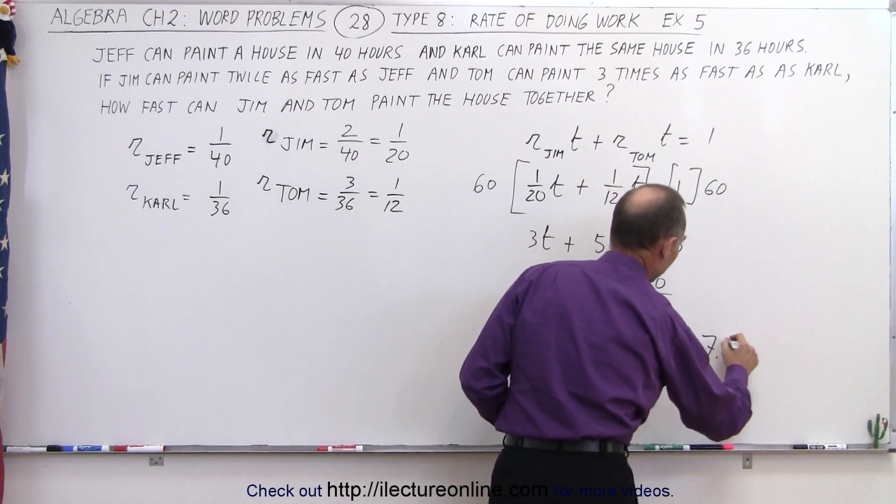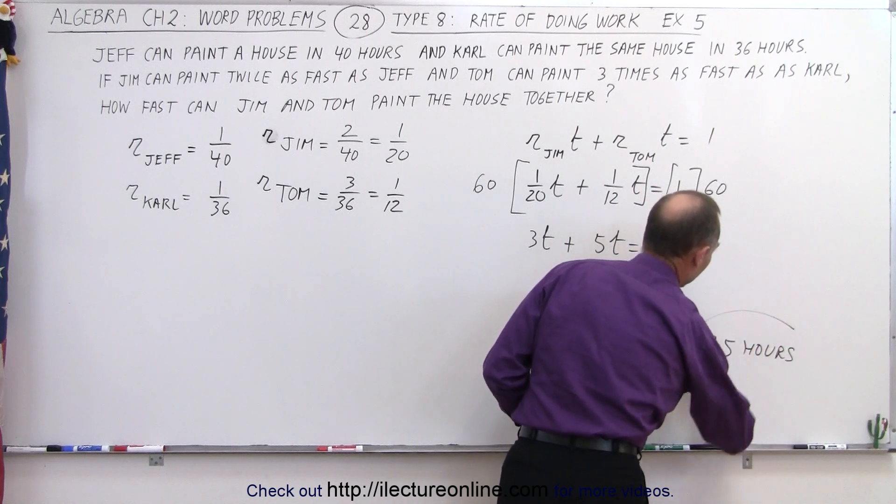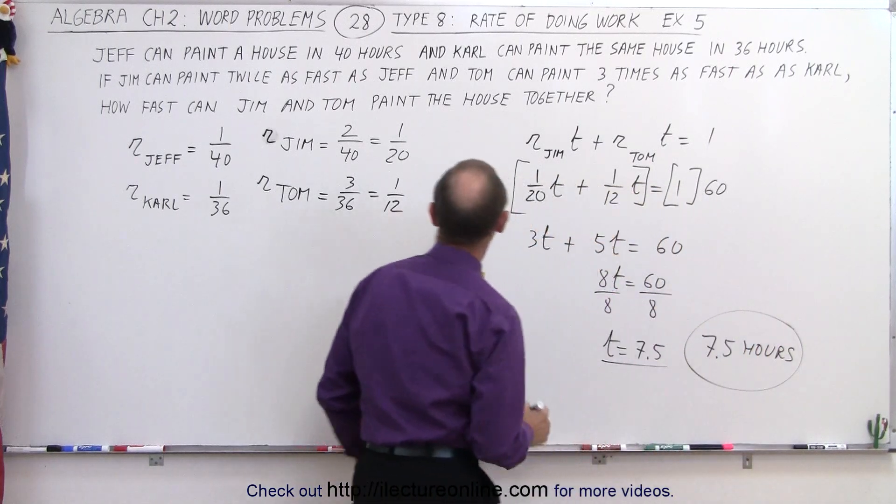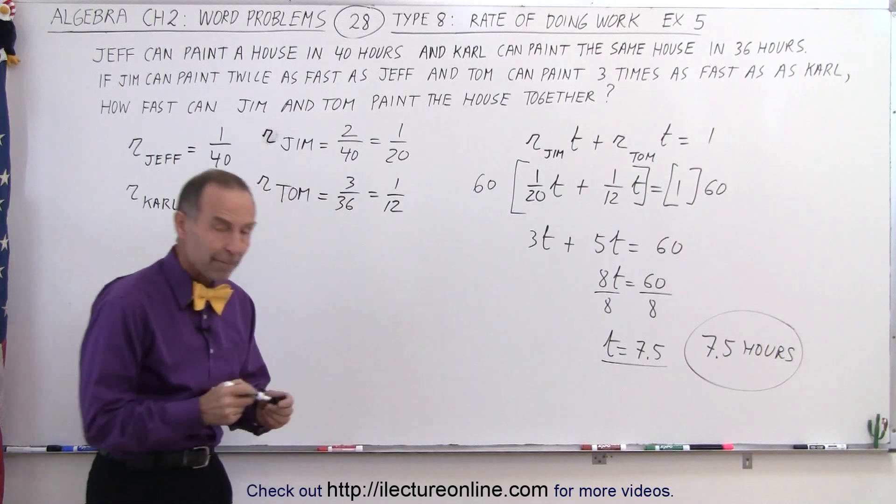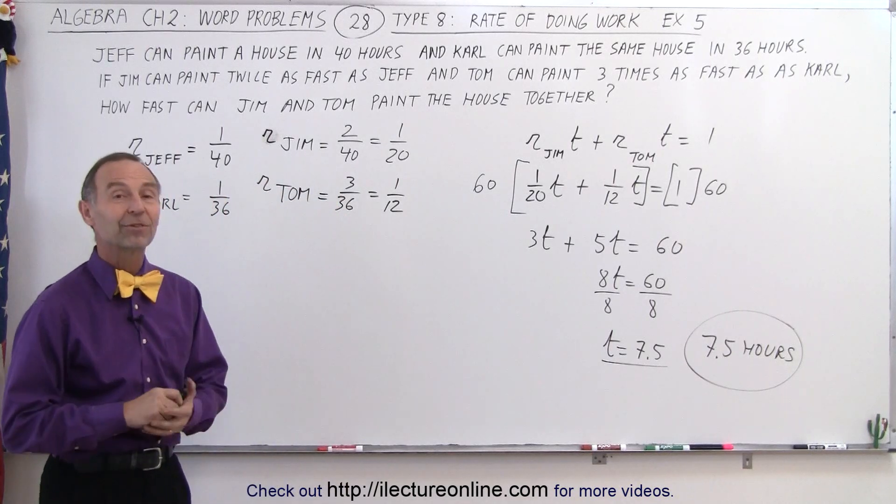In other words, 7.5 hours is all that's needed if both Jim and Tom paint the house together. And that's how it's done.